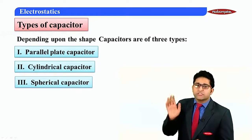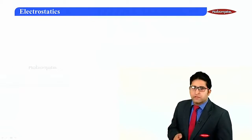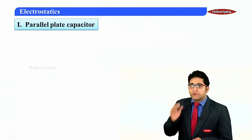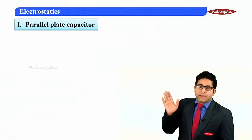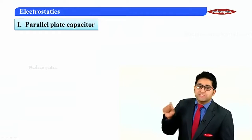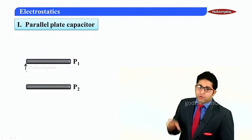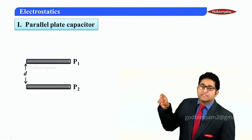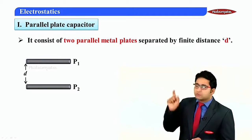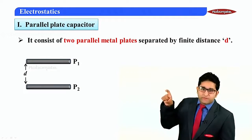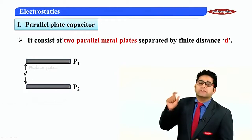Let us start with the first type of capacitor, which is the parallel plate capacitor. We have already learned this particular type. This capacitor consists of two parallel plates — plate P1 and plate P2 — which are insulated and separated by a finite distance, small d.